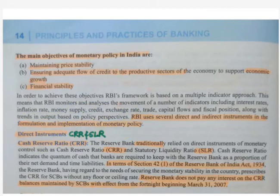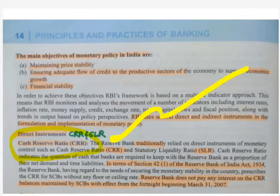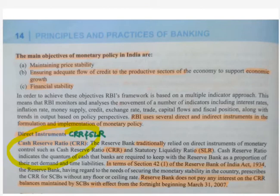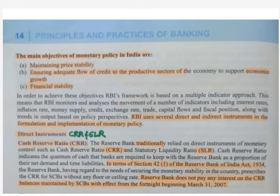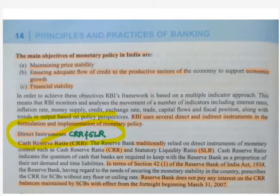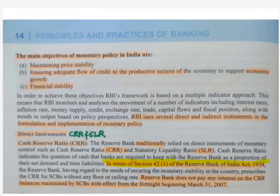The direct instruments used for implementation of monetary policy: first is CRR — Cash Reserve Ratio — the amount of funds or cash that needs to be kept with the RBI. It is mandatory for scheduled commercial banks. There are two direct instruments: CRR and SLR, that is Statutory Liquidity Ratio. Remember section 42-1 of the RBI Act: according to section 42-1 of the RBI Act, it is necessary to maintain both CRR and SLR.